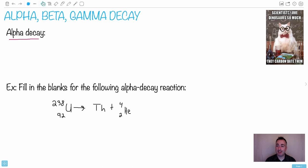I love a science cat. Scientists love dinosaurs so much, they carbon date them. Do you notice someone actually bothered to Photoshop and put a little dinosaur there, which I thought was so cute. Alright, so we've got alpha, beta, and gamma decay.